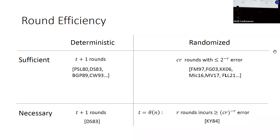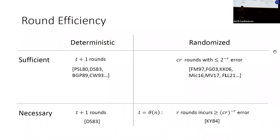Luckily, for randomized protocols the landscape is much better. The longer you run a protocol the higher the probability of achieving Byzantine agreement. From the feasibility side, if you run a protocol for c times r rounds where c is a constant, then solutions exist that achieve Byzantine agreement with very high probability — except with probability two to the minus r. This was initially achieved by Feldman and Micali, and since then there has been a significant line of work improving this constant under different assumptions and corruption thresholds.